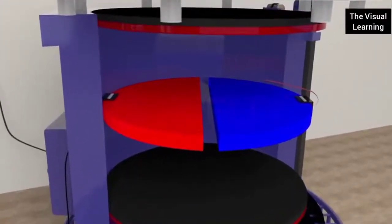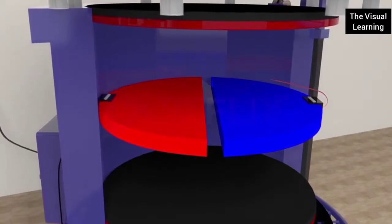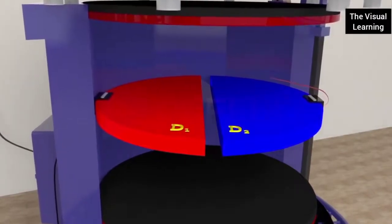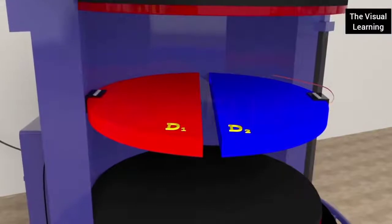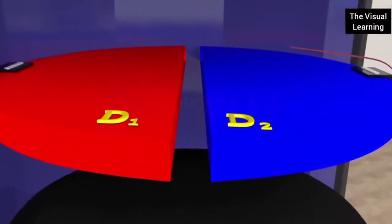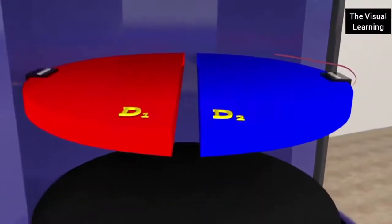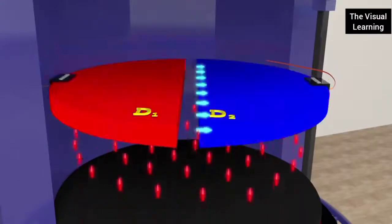A cyclotron consists of two D-shaped hollow metal discs, D1 and D2, known as DEs. These two DEs are placed with their plain edges facing each other, separated by a small distance. The two D's are connected to an oscillating voltage.